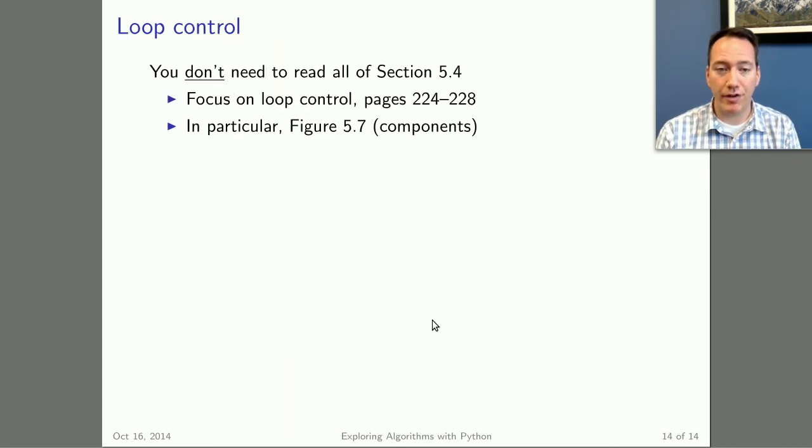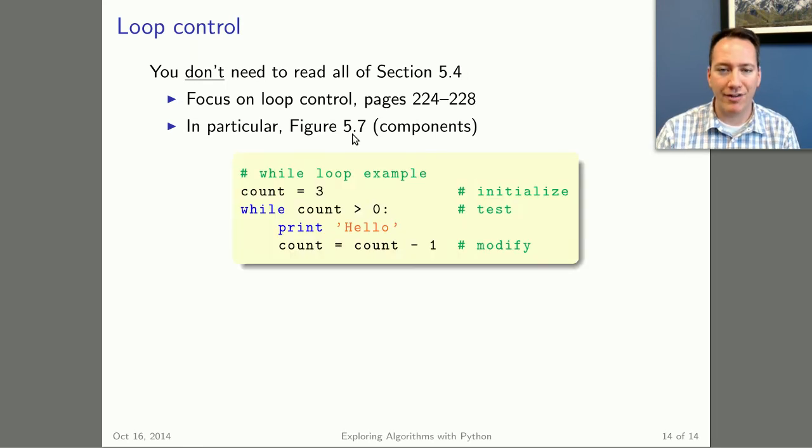One more thing about the book before we close. In section 5.4, there's a lot of stuff in there. And it's actually more than we're going to be able to cover this week in class. So I just want you to focus on the section about loop control. So don't worry about sequential search, don't worry about insertion sort. Those are great algorithms, and we will take a look at those in CS240, maybe a little bit in the data structures chapter a couple weeks from now. But for this week, just focus on loop control, it's just these four pages. In particular, Figure 5.7 talks about how every loop in any programming language, this is an algorithm structure.